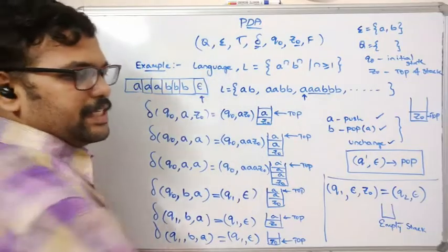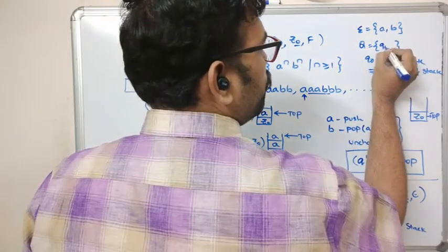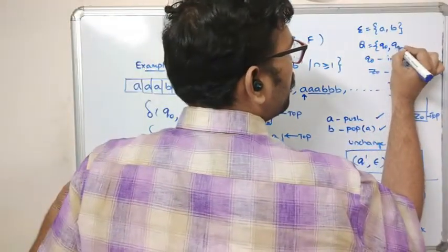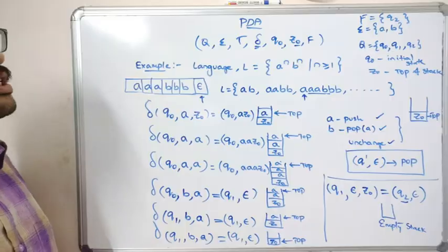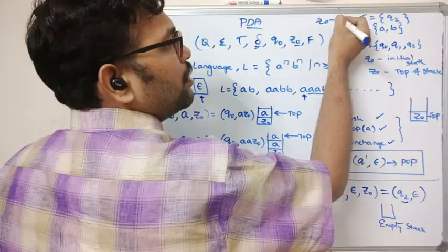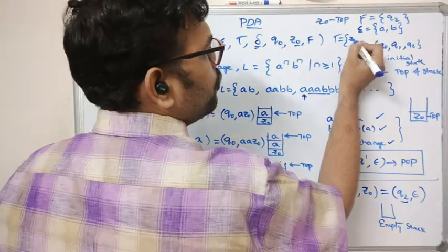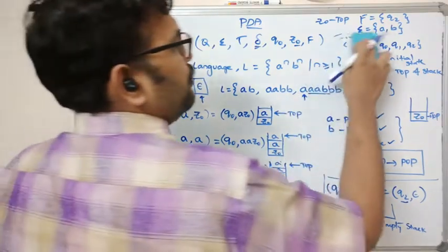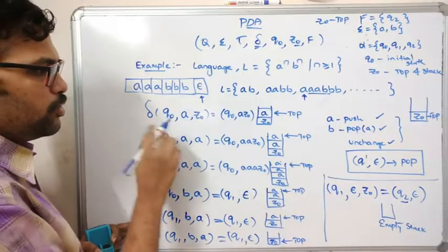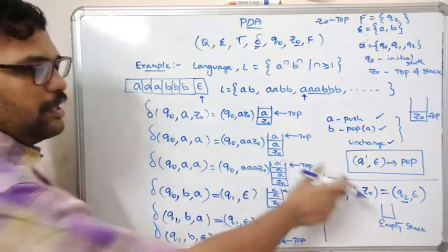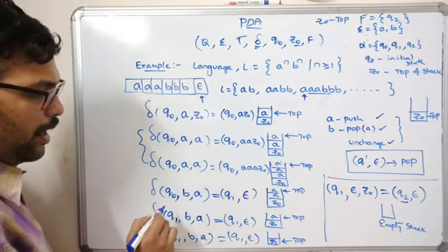When the stack is empty we are at state q₂. So Q = {q₀, q₁, q₂} and F = {q₂}. Now summarizing all the transition functions: there are seven transitions total. Note that δ(q₀, a, z₀) = (q₀, az₀) and δ(q₀, a, a) = (q₀, aa) are the two push transitions, which follow the same pattern.